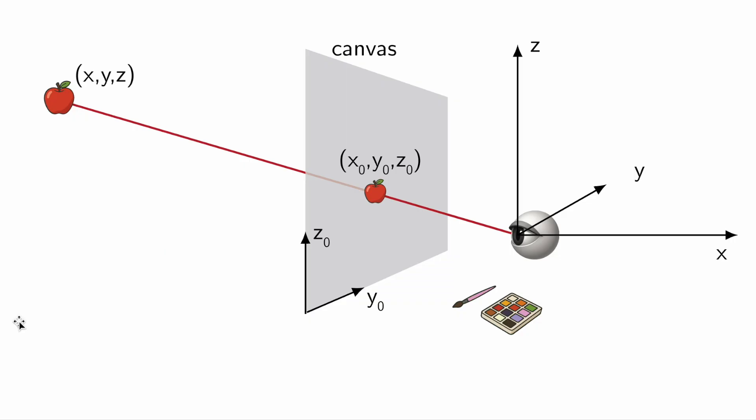Let me remind you that a point located in reality at coordinates XYZ is projected to coordinates X0, Y0, Z0 on the canvas. Since they lie on the same line coming out of the origin, they are related by the following equations.